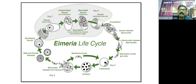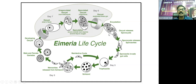Schizonts are formed, then merozoites are formed. From that, male and female gametes are formed. After that, the final oocysts are shed through the feces, and again there is reinfection. This completes the life cycle.